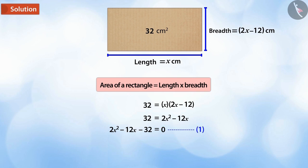Can you find the value of x from this quadratic equation? For the value of x, let's select a term in equation 1, which is the middle term of the equation. Hence, let's split the midterm, which is, minus 12x is equal to minus 16x plus 4x.